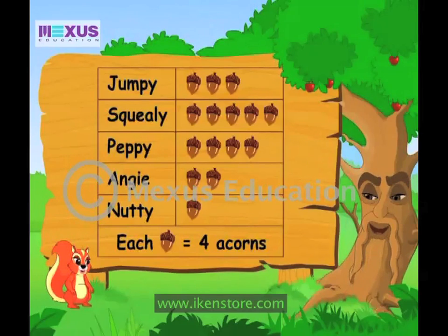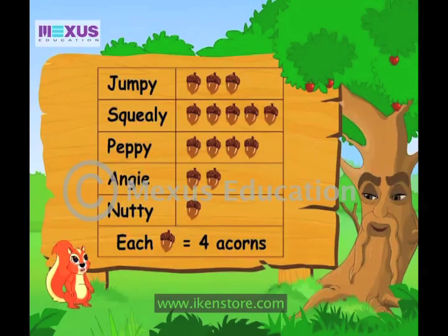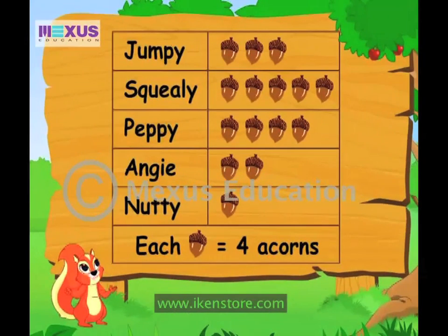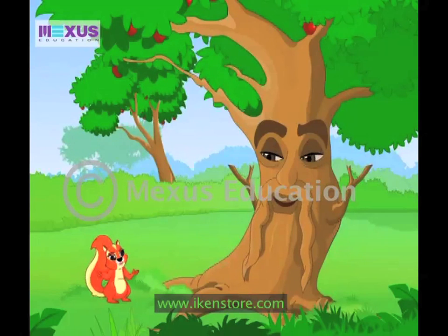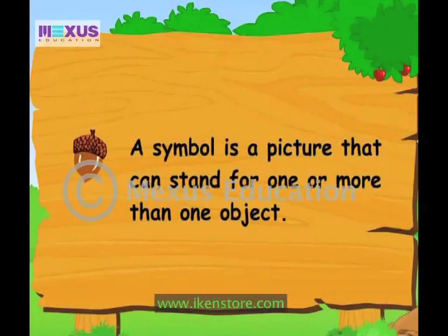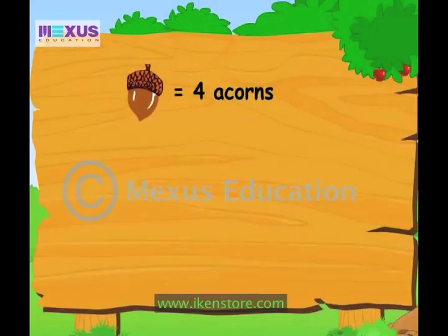Hey Amber, take a look at this. This is the picture graph showing the number of acorns owned by each of your friends. Acorns? That's one of my favorite fruits. So can you tell me how many acorns does Peppy have? That's easy — Peppy has four acorns. Tricked you! It's easy to get fooled by the pictures and count the number of objects. Sometimes one picture can stand for more than one object. In that case, we call the picture a symbol. Here, each acorn symbol stands for four acorns.